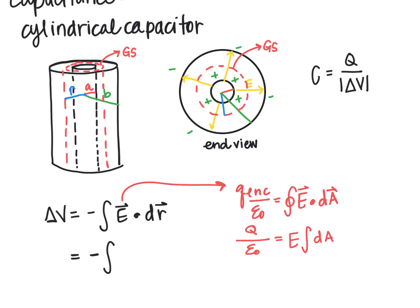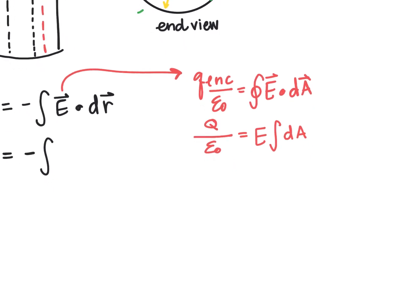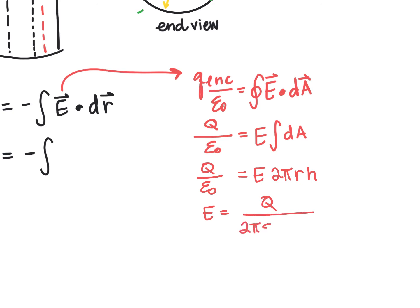The electric field pierces through the area perpendicularly, so the electric field vector and the area vector are parallel. The dot product becomes the magnitude of the electric field times the integral of the area, which is the surface area 2πrh. So the electric field strength is q over 2π epsilon naught r h.